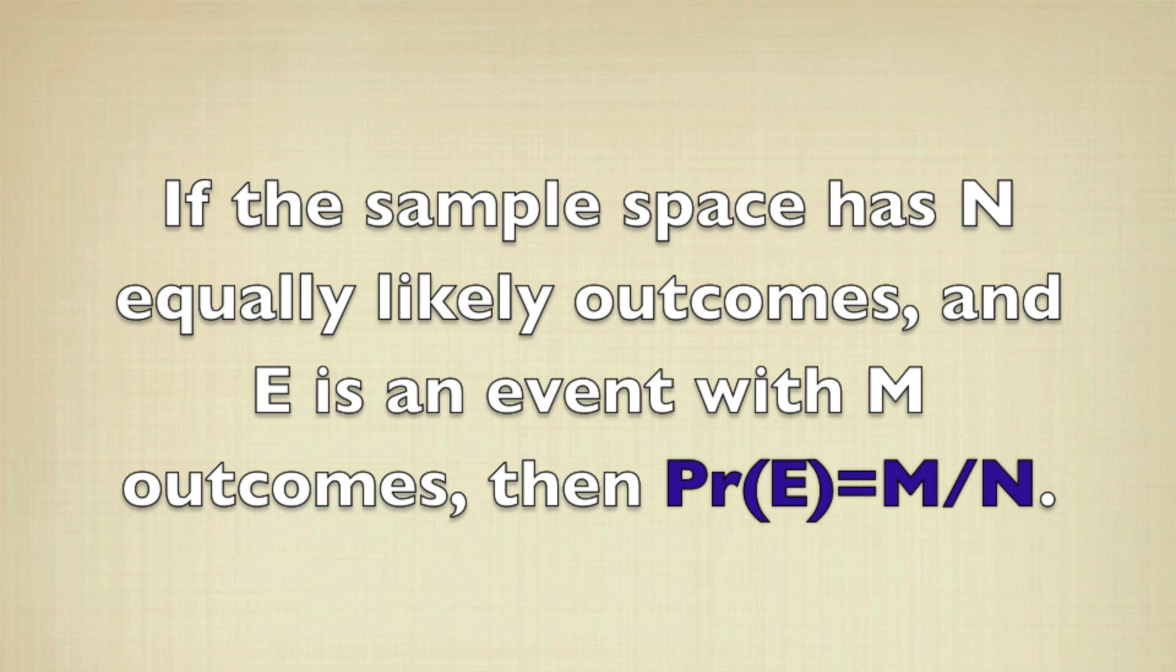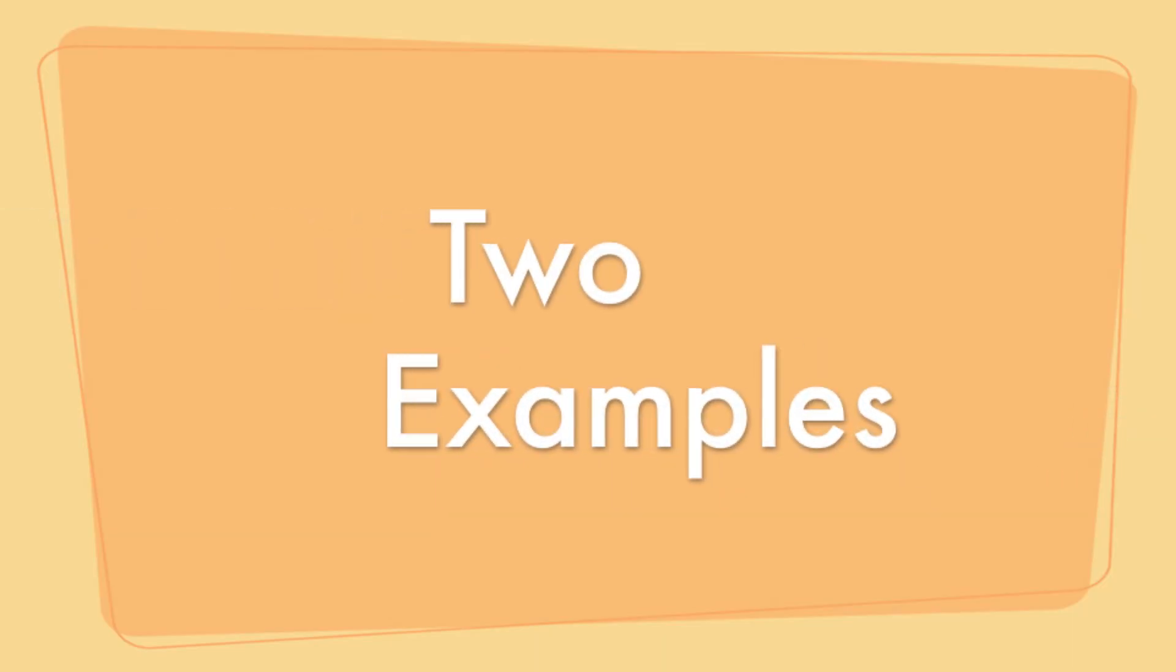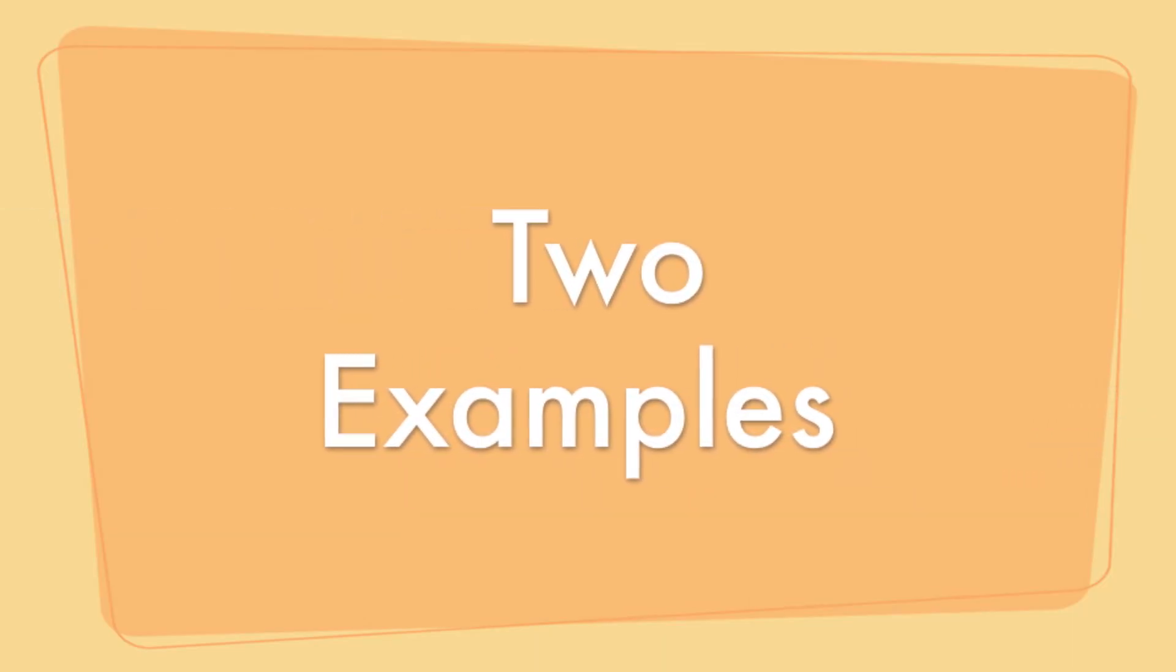If a sample space has N equally likely outcomes and E is an event with M outcomes, then the probability of E is the quotient M over N. In other words, the probability of event E is the number of outcomes in E divided by the total number of outcomes. We're going to use this in a couple of different ways. Here are two.